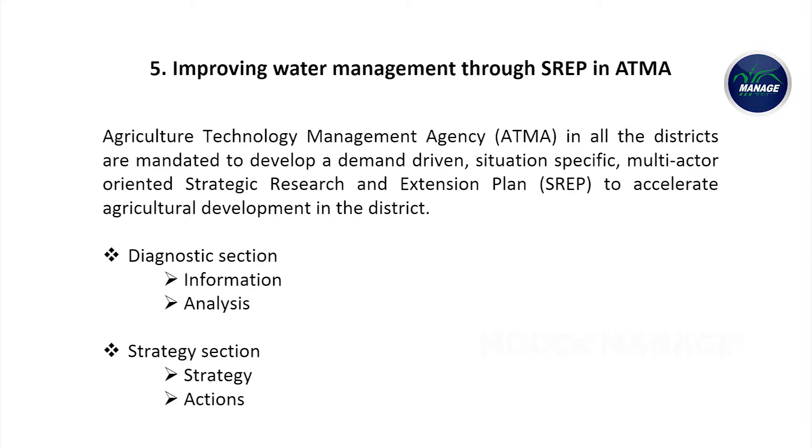The fifth most important strategy is water management approaches using SREP — the Strategic Research and Extension Plan. The Agriculture Technology Management Agency at the district level can be of huge help if used wisely. The SREP encompasses a diagnostic section and a strategy section wherein innovations and methods adopted by farmers can be replicated at a larger scale, and ATMA can play an active role in propagating and promoting such practices to bring efficiency in water management in agriculture.